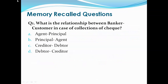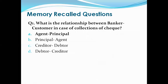Question 1: What is the relationship between banker and customer in case of collection of a cheque? Options are: agent-principal, principal-agent, creditor-debtor, debtor-creditor. The right answer is A, that is agent-principal. When a customer gives a cheque for collection, the bank acts as an agent and the customer is the principal.